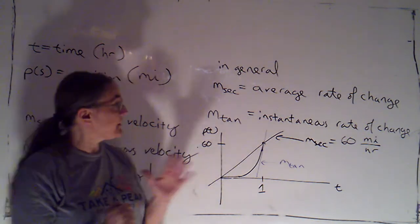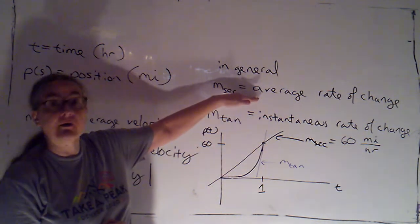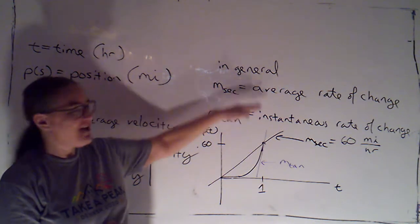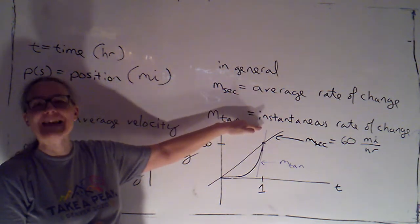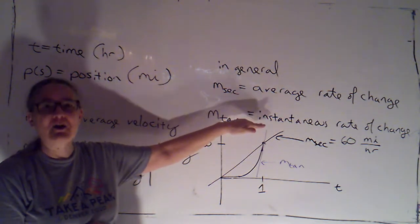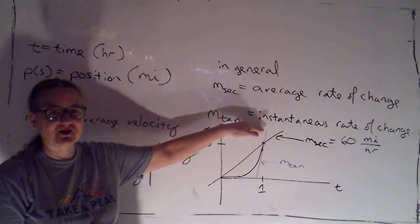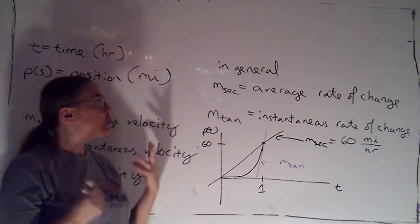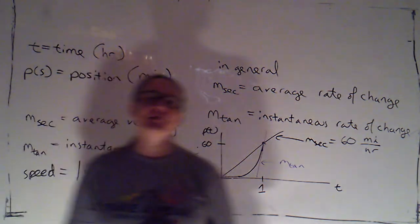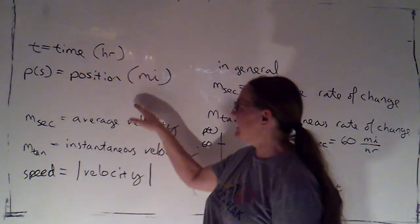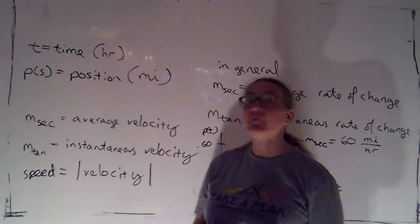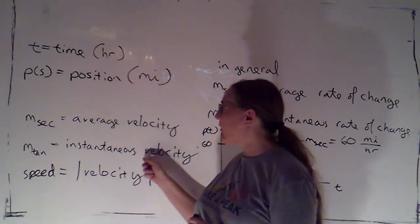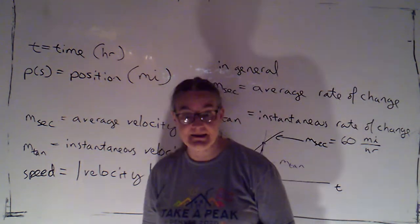It's very important that we know when we care about an average rate of change versus an instantaneous rate of change. That's what calculus is going to allow us to calculate. One of the big examples will be when we have a position function, so that we're calculating our instantaneous velocity.